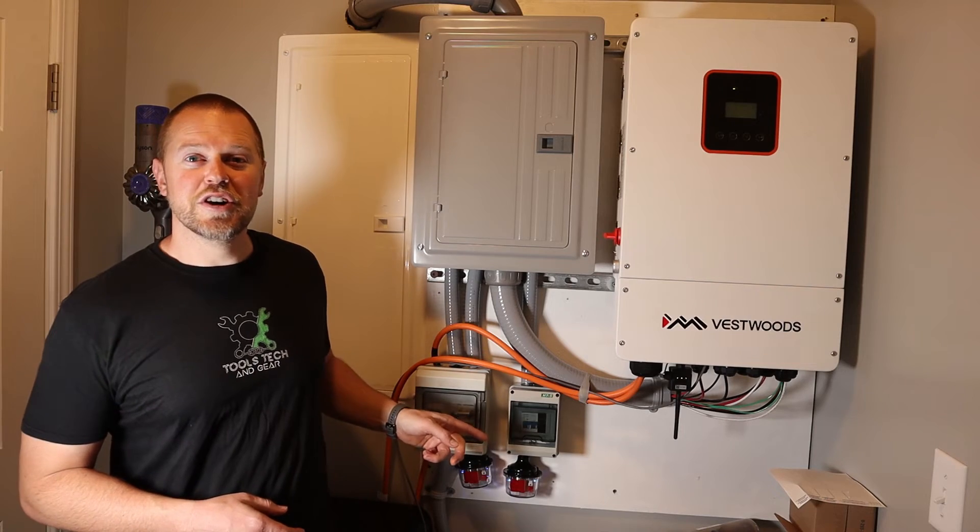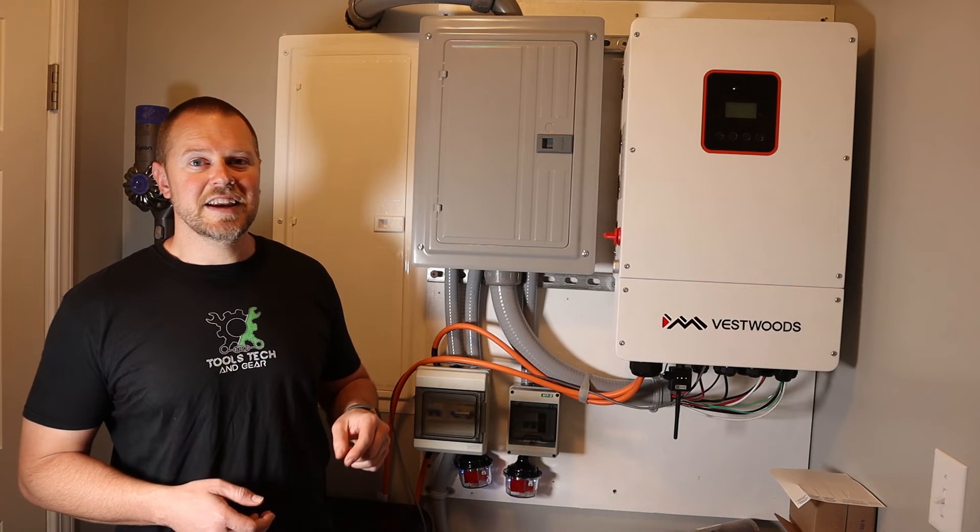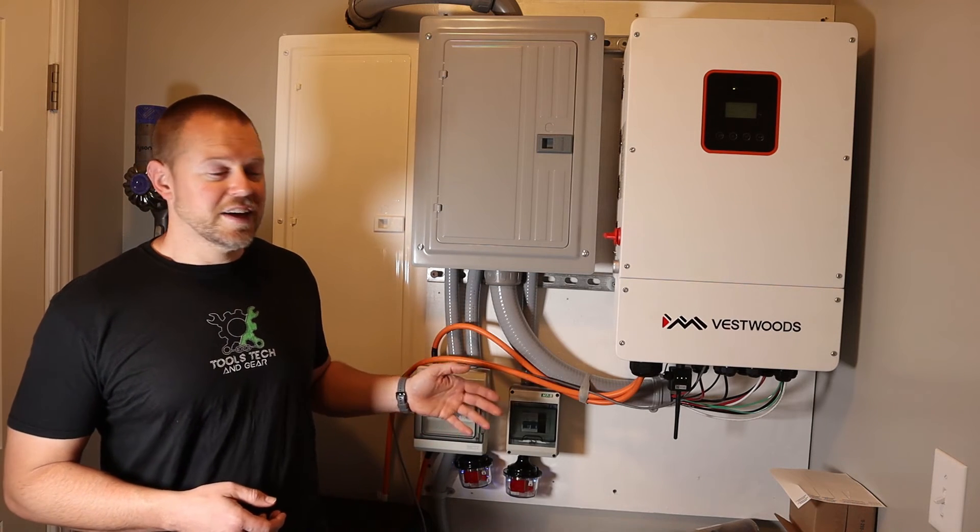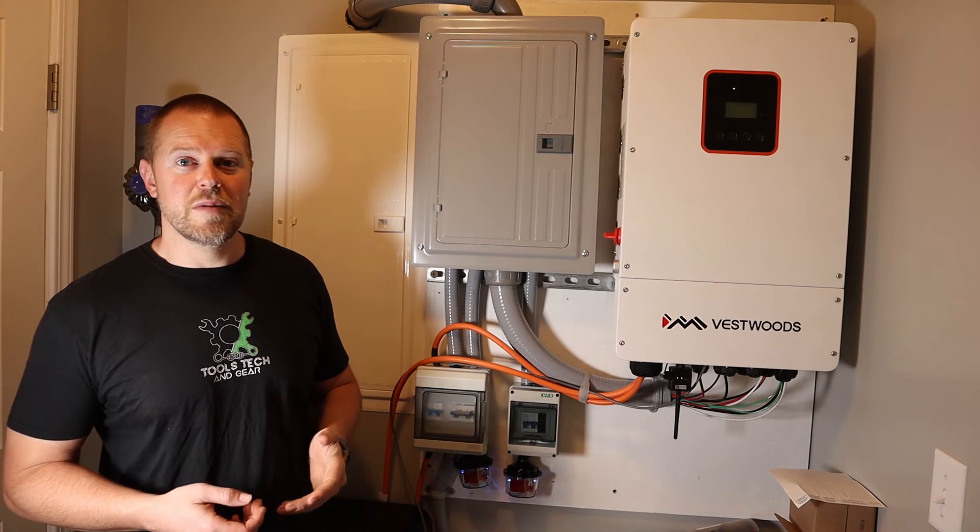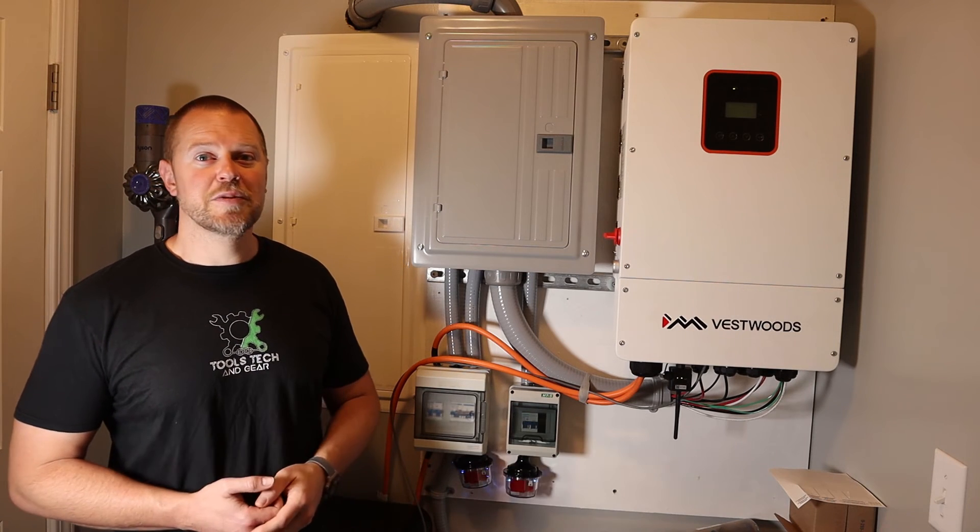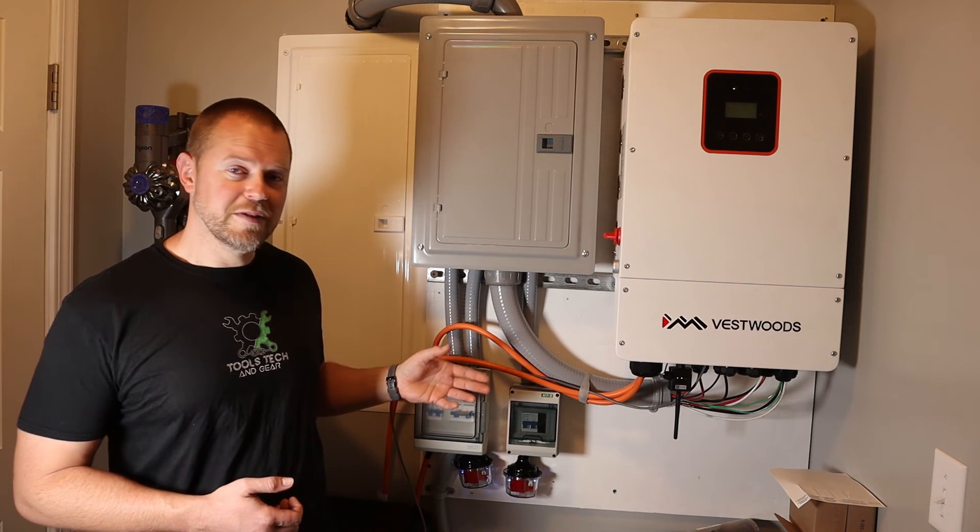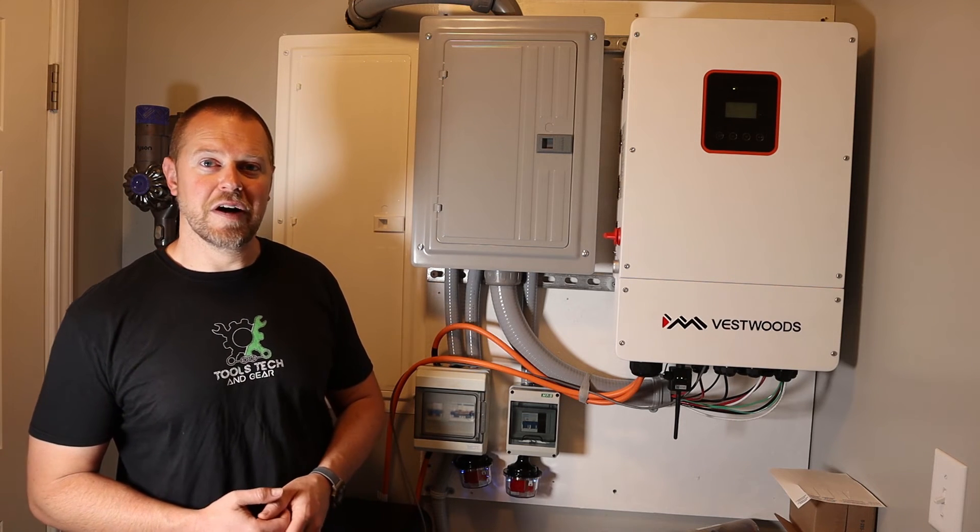This midnight solar surge protection device was about $110 on Amazon. I'll have a link to that down below. It's a really good idea to have one of these in your system to prevent damage to your inverter and battery and other equipment that you may have in your solar system. In some areas, it may also be required. So I will definitely have a link to this down below if you want to check out more information on them.